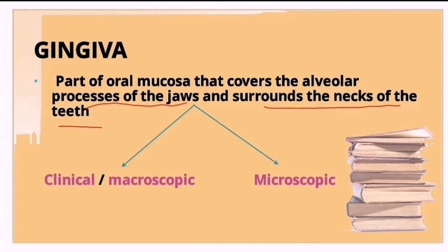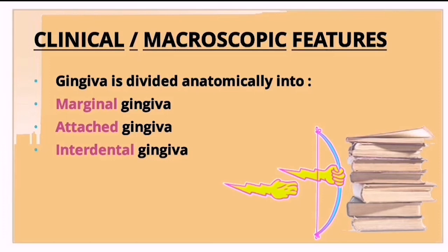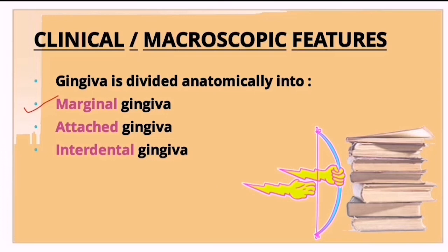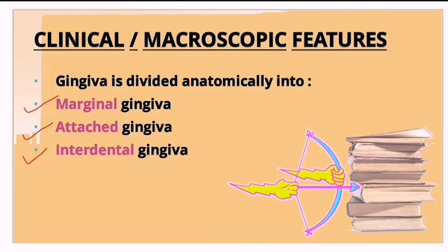Gingiva is basically divided into two parts: a clinical or macroscopic part, and a microscopic part. Anatomically, gingiva is divided into three parts: marginal gingiva, attached gingiva, and interdental gingiva.